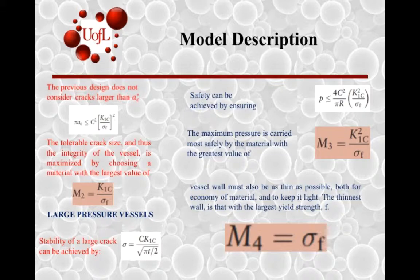In the graph, this is going to be M1, this is going to be M2, and this is going to be M3.